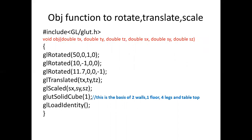Let us look at the first function, the OBJ function. The OBJ function consists of six parameters: the first three parameters are for translation — TX, TY, and TZ, that is translation on the X, Y, and Z axes — and the next three parameters are concerned with scaling in the X, Y, and Z directions.